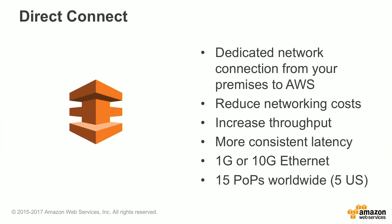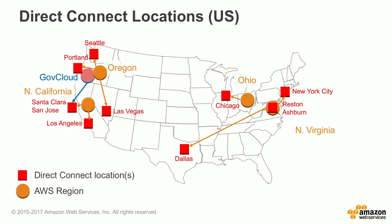AWS Direct Connect is a dedicated network connection from your premises to AWS. It reduces your networking costs and can increase throughput and gives you more consistent latency. For Direct Connect, you can get a 1 or 10 gig Ethernet connection. Smaller connections are available through the AWS Partner Network. Here's a map in the US of Direct Connect locations currently available. Using the example of connecting to the Northern Virginia US East 1 region, you would do a Direct Connect connection through New York, Reston, Ashburn, or Dallas.